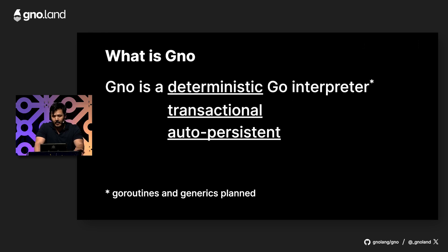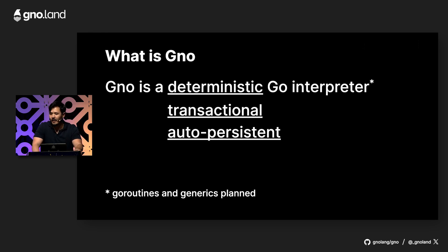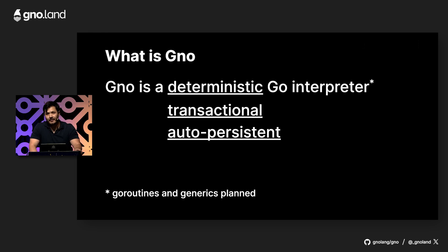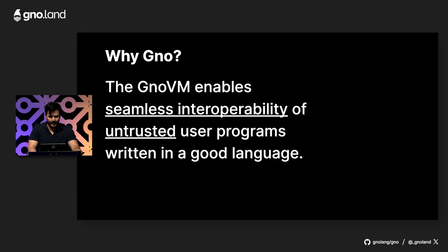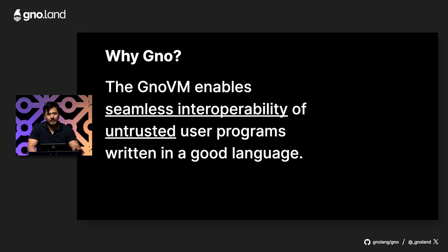I'm here today to talk about Gno and the lessons learned about Go while implementing the Gno virtual machine. Gno is a deterministic Go interpreter. It's also a transactional interpreter, and I'll show you what that means. It's also an auto-persistent interpreter. The problem that the Gno virtual machine solves uniquely is that it enables seamless interoperability of untrusted user programs written not just in Go but any general-purpose language.